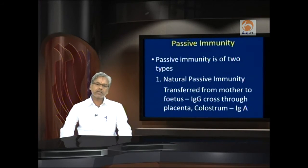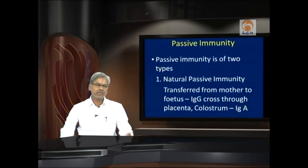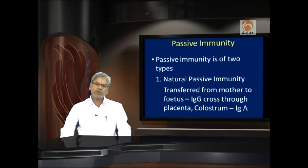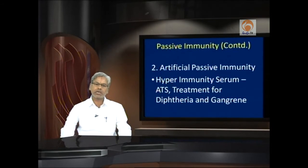Passive immunity is of two types: natural and artificial. Natural passive immunity comes from the mother and is transferred to the fetus. Immunoglobulin G class of antibodies cross through the placenta effectively and protect the fetus against a number of infections. The first milk given by the mother to the neonatal child — called colostrum — is rich in IgA antibodies. This IgG and IgA generate natural passive immunity.